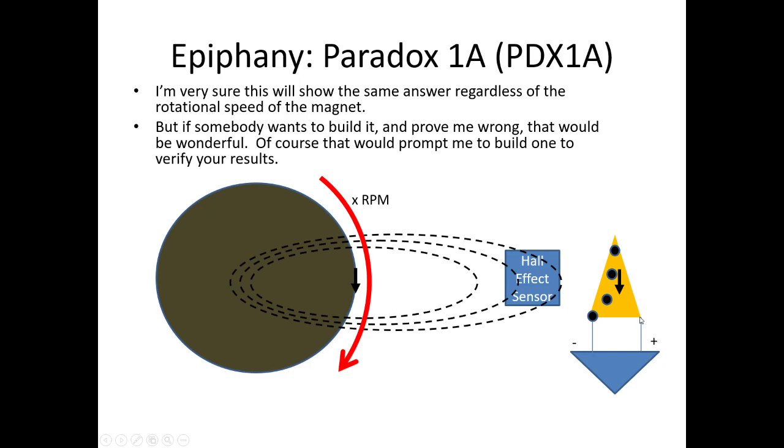If you spun this and the magnetic field lines did in fact move with the magnet, you would see a difference in the Hall effect sensor. But I know for a fact, from what I see for paradox two and three, and because we can't have the paradoxes we described in the first video, that this experiment will show absolutely nothing - no difference in the measurement from this Hall effect sensor, regardless of the velocity that you spin this magnet.